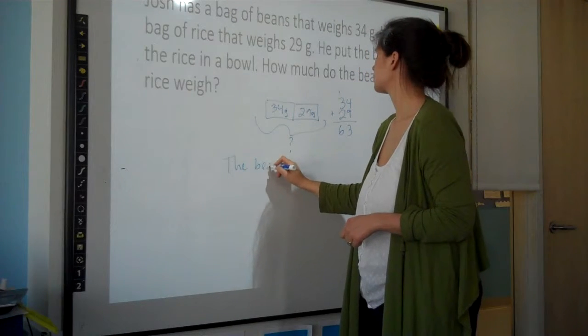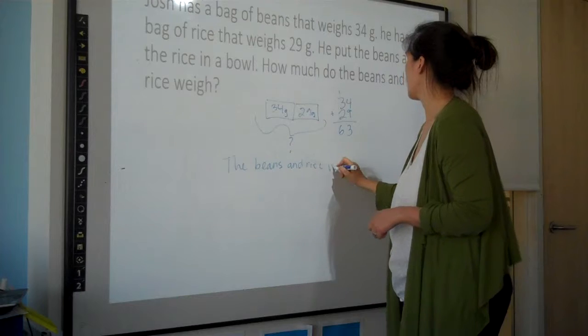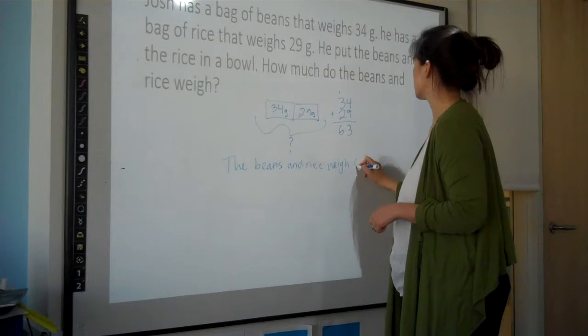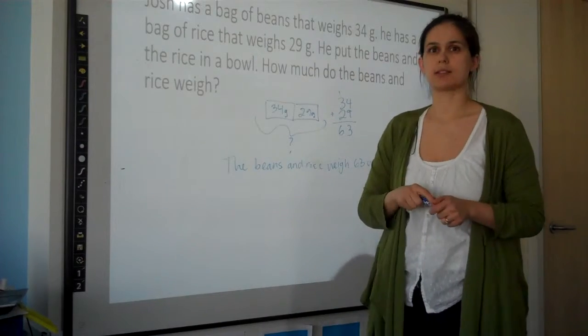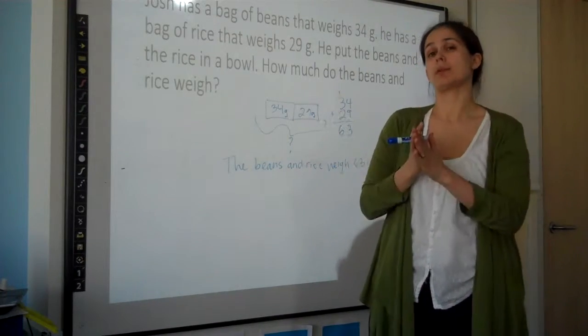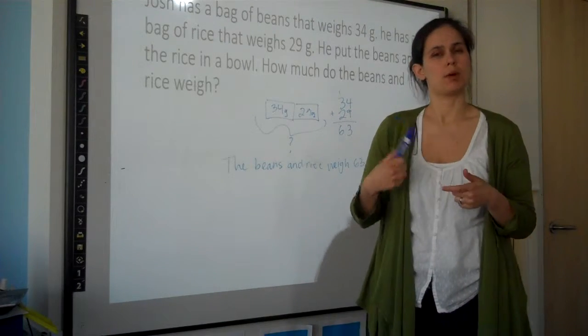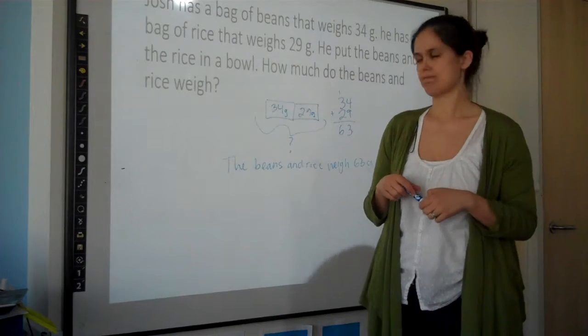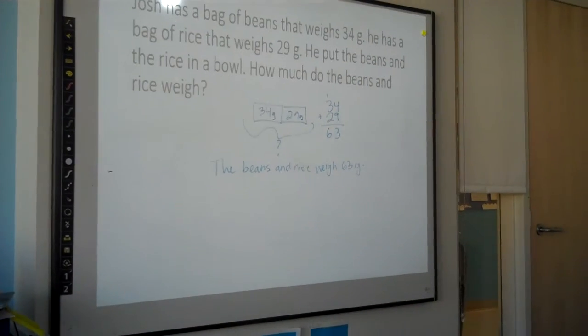The beans and rice weigh 63 grams. And now that we are done and we've talked about this as a class, I take my beans and rice and I put them on the scale and I check that they weigh 63 grams. And I'm going to do that for a subtraction problem, a multiplication problem, and a division problem. All right.